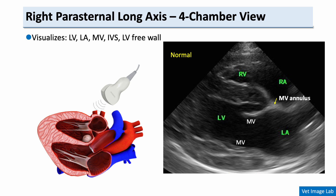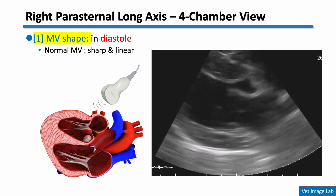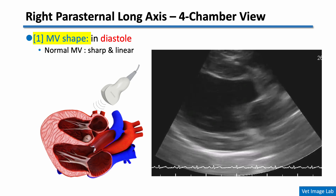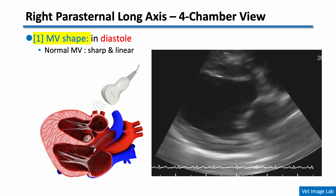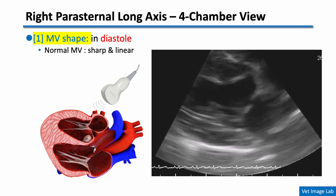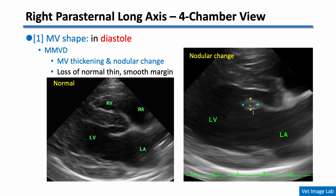Let's start from the right parasternal long axis view. In the four-chamber right parasternal long axis view, we can see the left ventricle, left atrium, mitral valve, and the mitral annulus at the junction between the left atrium and left ventricle. The mitral annulus is a fibrous ring that forms the attachment point for the mitral valve leaflets. The first thing we evaluate is the shape of the mitral valve — it should appear sharp and linear, forming a clear border. This morphologic evaluation must be performed during diastole, when the valve is fully open. In dogs with MMVD, the mitral valve leaflets become thickened and often show nodular irregularities along the leaflet margins, reflecting underlying myxomatous degeneration.